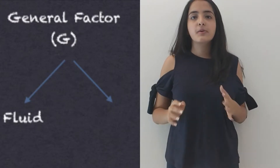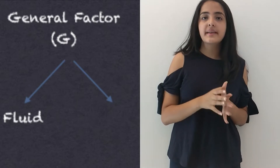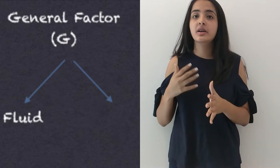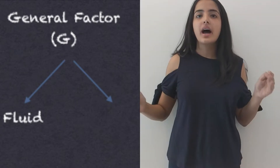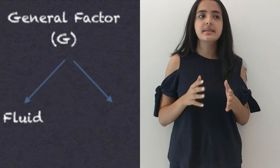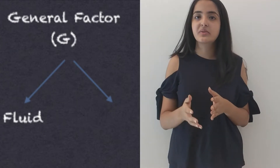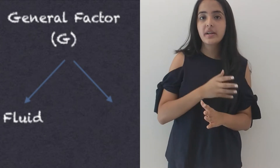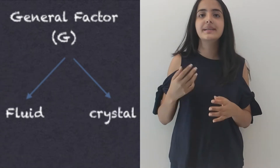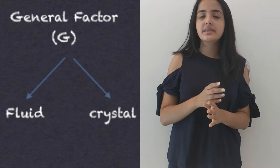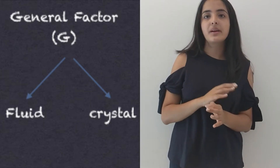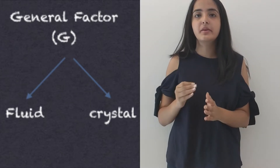The first set of divisions introduced to G were those of fluid and crystallized intelligence. Fluid intelligence is the ability to act and think quickly — the intelligence used in situations where you don't already know what to do. Crystallized intelligence is the knowledge built up over a lifespan due to prior experiences and learnings.